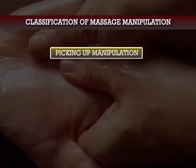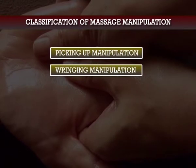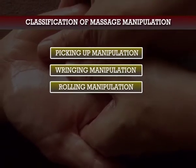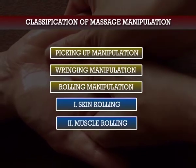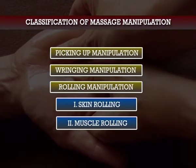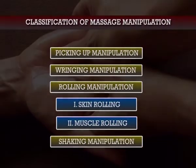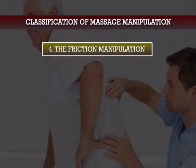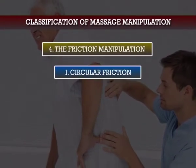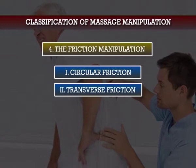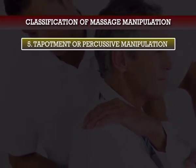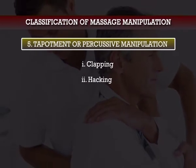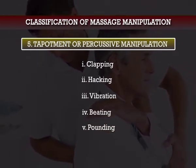Petrissage also includes: picking up manipulation, wringing manipulation, and rolling manipulation — which includes skin rolling and muscle rolling — and also squeezing manipulation. Number four is friction manipulation, in which we have circular friction and transverse friction. Number five is tapotement or percussive manipulation, in which we have clapping, hacking, vibration, beating, pounding, and tapping.